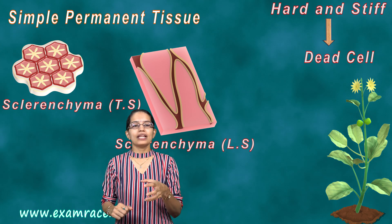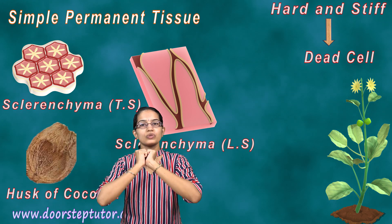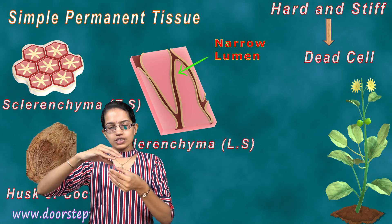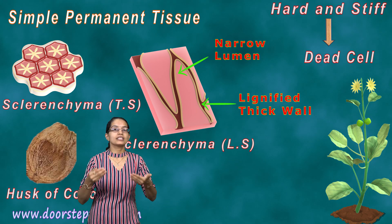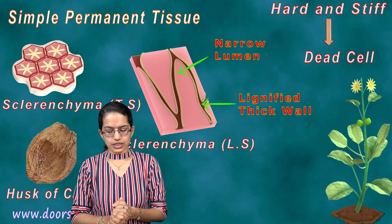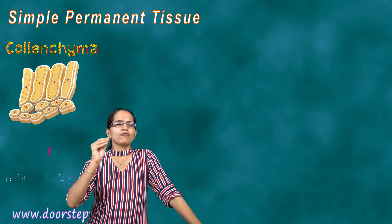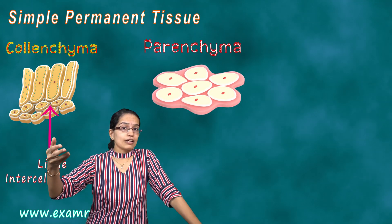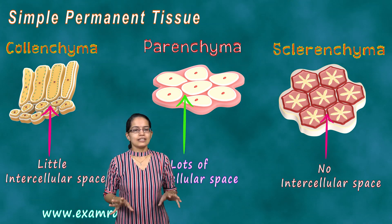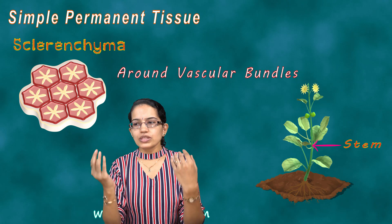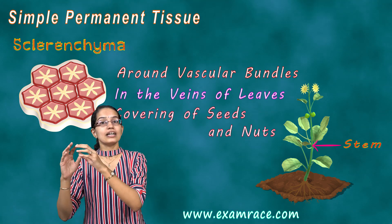It has dead cells. A good example is the husk of the coconut — the husk of the coconut is made up of dead tissues and those are known as scurlenchyma. You have long and narrow structures with the presence of lignin. So far we were talking about cellulose as one of the components, and now we are talking about lignin. These have a very thick wall with no intercellular spaces — scurlenchyma has no intercellular spaces. It is mainly present in the regions of the stem, around the vascular bundles, in the veins of the leaves, or the coverings of the seeds and the coverings of the nuts.